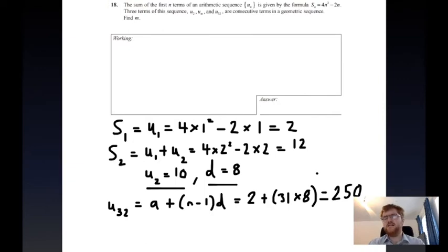31 times 8 is 248, plus the 2 is 250, so we know u32 is equal to 250. We've got all the information we need from u2 and u32.